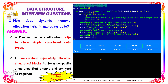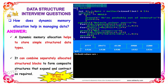How does dynamic memory allocation help in managing data? Dynamic memory allocation helps to store simple structured data types. It can combine separately allocated structured blocks to form a composite structure that expands and contracts as required. So dynamic memory can expand and contract as required during runtime.